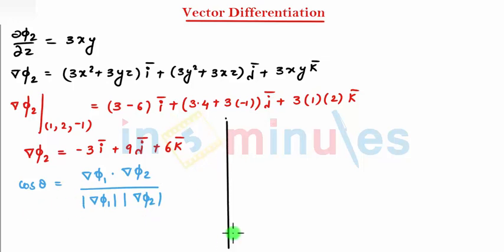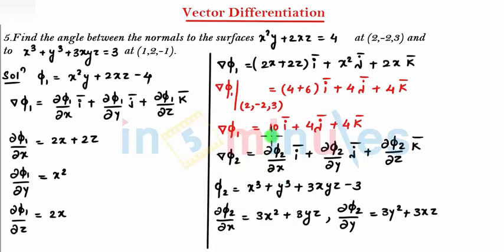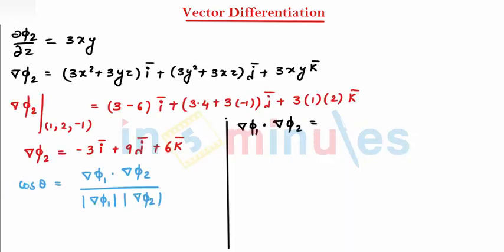When we find ∇φ1 · ∇φ2, this is my φ2 and my φ1 is (10, 4, -6). First I will be getting -30, then second I am getting +36, and third I am getting +24, which comes to be -30 + 36 + 24, that comes to be 30.